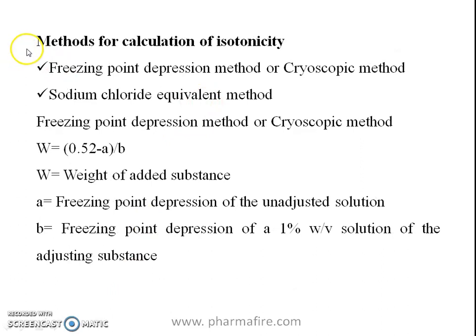Methods for calculation of isotonicity — this is an important point for preparation of the GPAT exam. Definitely there is one question every year on isotonicity, either on the introduction part or the calculation part. The freezing point depression method, also called the cryoscopic method, has the formula: w = (0.52 − a) / b, where w is the weight of the added substance, a is the freezing point depression of the unadjusted solution, and b is the freezing point depression of a 1% w/v solution of the adjusting substance.